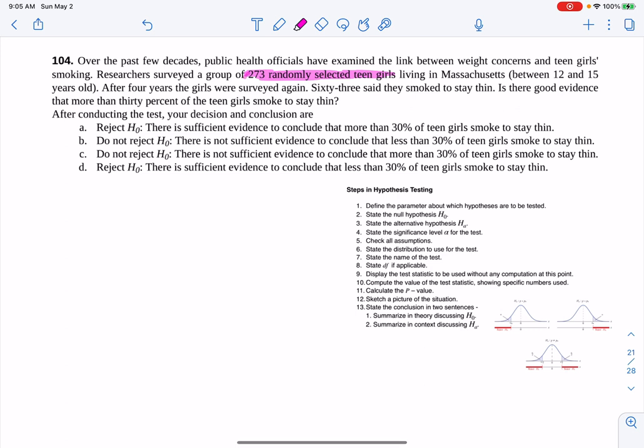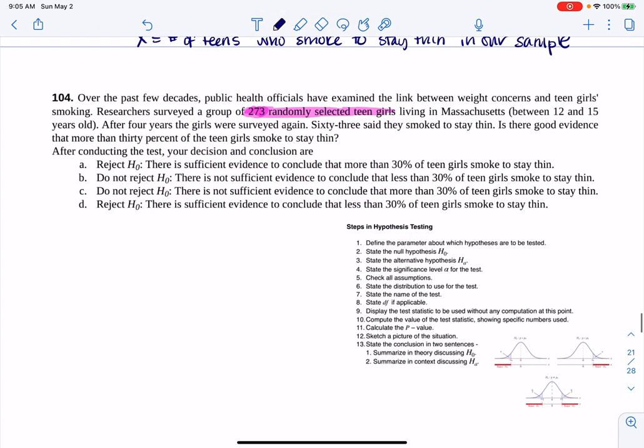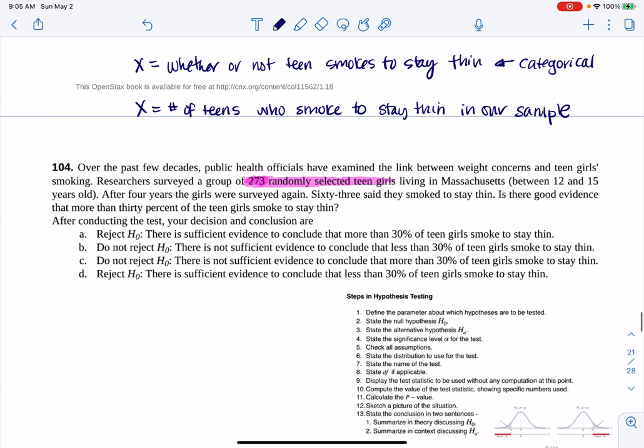Imagine you were one of these 273 girls - they're asking you at the end of four years, did you smoke to stay thin? Your response will be a yes or no, so this is technically a categorical variable. What I'm going to keep track of is the number of successes, the number of teens who smoke to stay thin in our sample, and then ultimately I'm going to turn that into a proportion, the proportion of teens who smoke to stay thin.